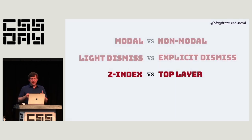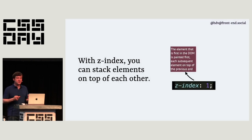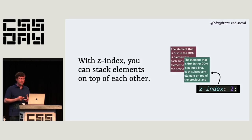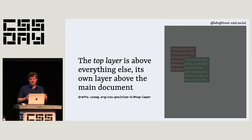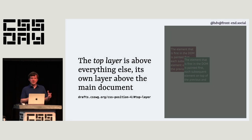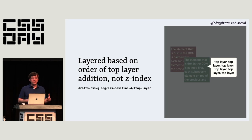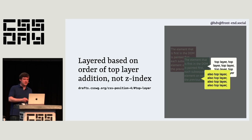A third difference is layering. The z-index property allows you to order things — the highest number wins. The top layer is a concept fairly new to the web platform. It was there for full-screen content and is now there for dialogs and popovers. It's basically above everything else — above all your z-indexing. The z-indexing happens in the main document, while the top layer is basically a sibling to the HTML element. Everything in the top layer will always be above. The order of rendering in the top layer is determined by when you put something into it — later additions appear above earlier ones.